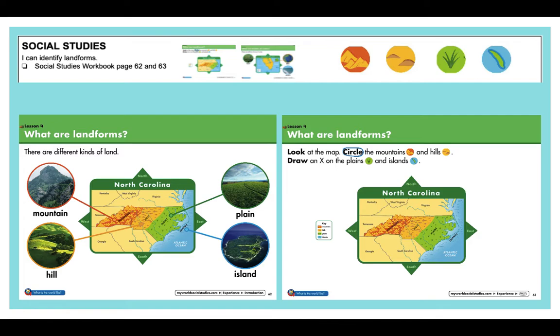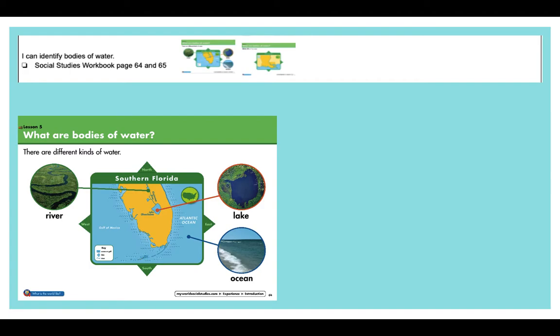So here's what they want you to do. Look at the map. Circle the mountains and the hills. So on the map, you're going to circle anything that looks like a mountain or a hill. Then it says draw an x on the plains and the islands. So you're going to look for those green plains. Cross that off. And then there's little islands along the ocean. Cross those off too. All right? So that's your first lesson in social studies.